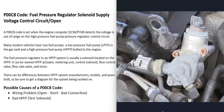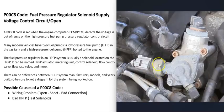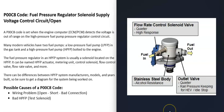Bolted to the engine is a high pressure fuel pump that rides on a cam lobe. The cam lobe is what pumps up the high pressure fuel going through the fuel rail. Located on the high pressure fuel pump is a solenoid — this is the fuel pressure regulator. It can go by different names such as high pressure fuel pump actuator, metering unit, control solenoid, flow control valve, or flow rate control solenoid valve, depending on the manufacturer.